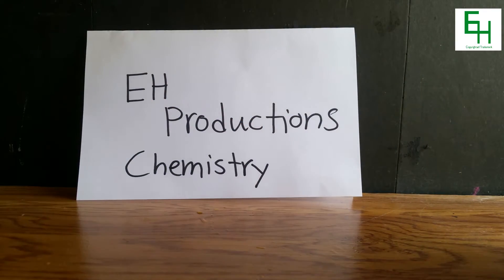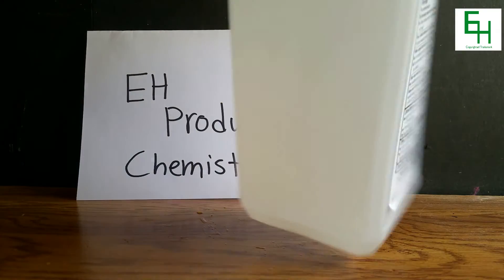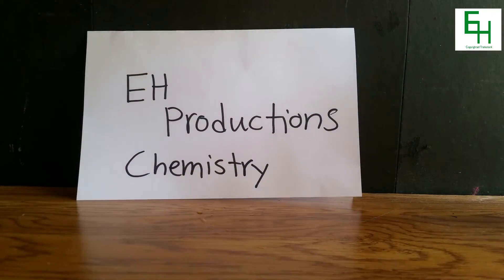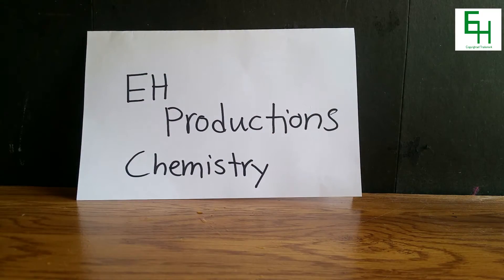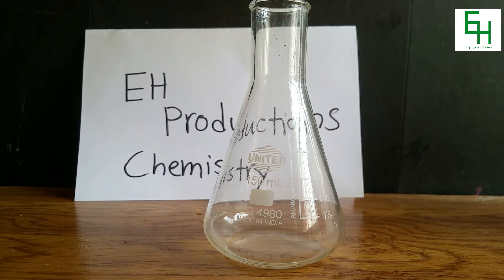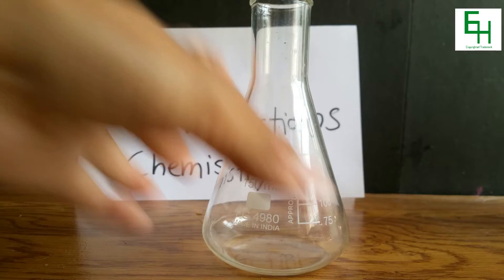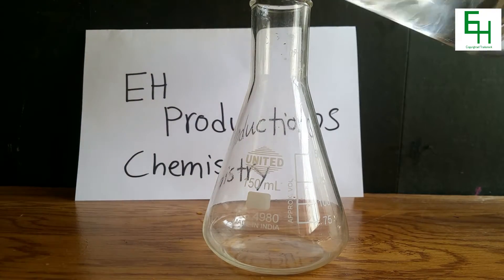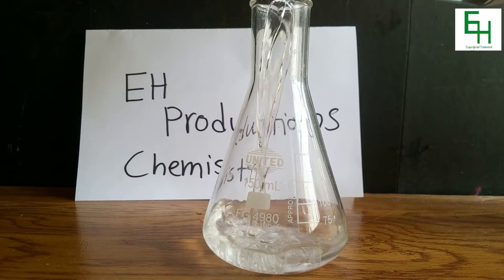Alright next, get some alcohol, isopropanol alcohol. I'm using 91% isopropanol alcohol. And we'll be measuring out about 150 milliliters of the alcohol. You don't need to be exact, but just measure it out.